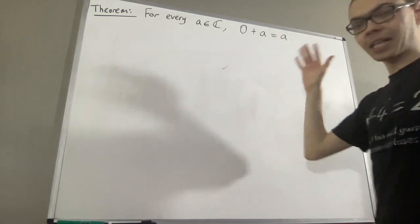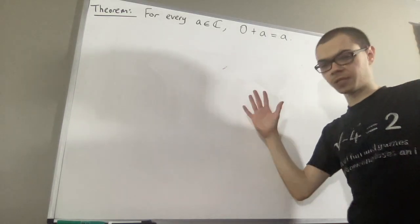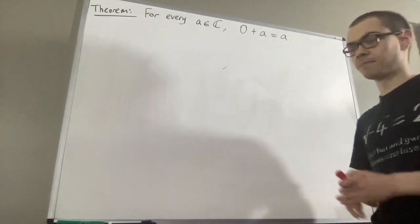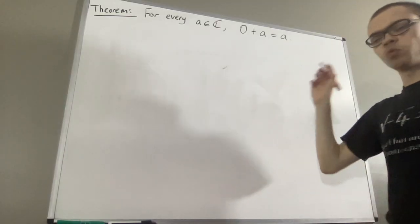Now in this series we are looking at a list of axioms for the complex numbers. These axioms come from MetaMath and I'll leave that list of axioms in the description below.